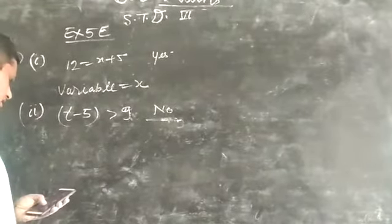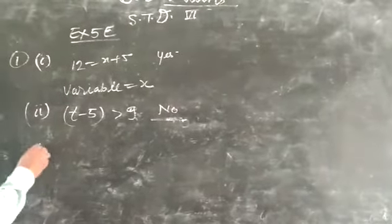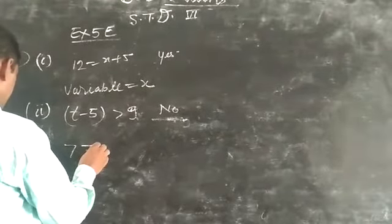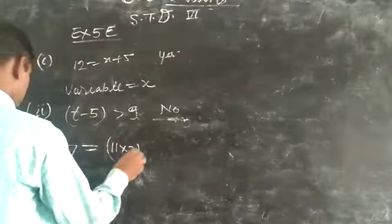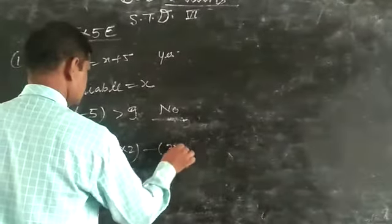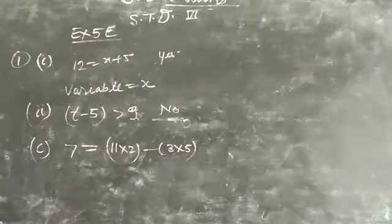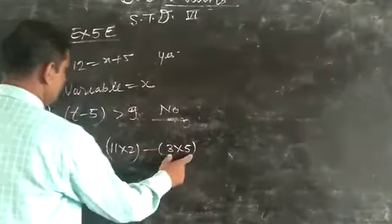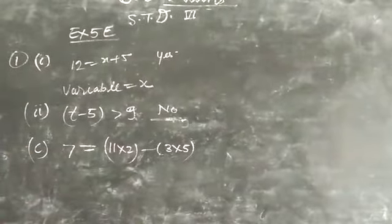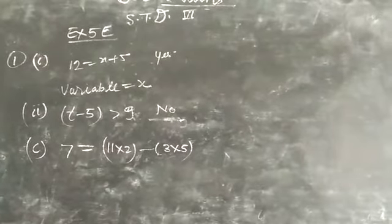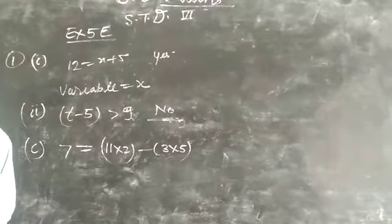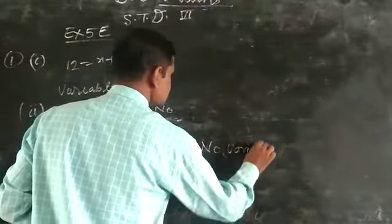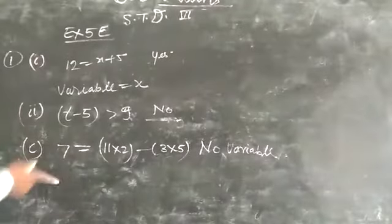The variable is what we have talked about. Part (c): 15 minus 15 - you can do it, but this is with no variable. No variable.